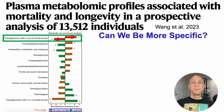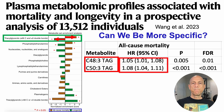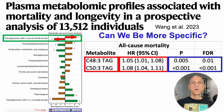In the supplementary data, they looked at associations for individual metabolites with all-cause mortality risk. Both TG48-3 and TG53 were significantly associated with an increased risk of death for all causes, as the hazard ratio for each is greater than one and the 95% confidence interval is completely to the right of one. More specifically, relatively higher levels of TG48-3 were associated with a 5% higher risk of death for all causes, and an 8% higher risk for TG53.